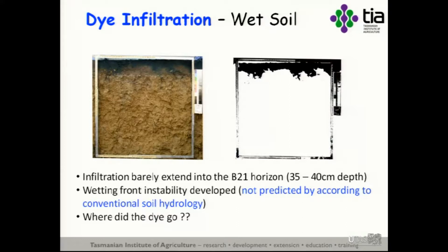So in the wet soil — we had this uneven wetting front. But if it's not water repellent and the structure's fairly even, why did we get this development of wetting front instability? That should have been even infiltration. And what's more, where did the dye go? That's not 25 millimetres of dye. So we have real questions about not only when these soils are really dry and the preferential processes, but things aren't going right when they're wet either.